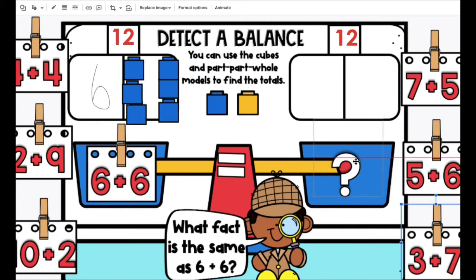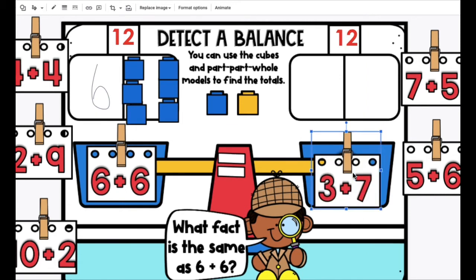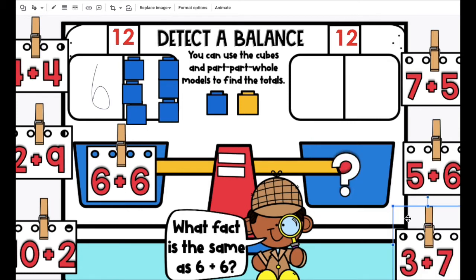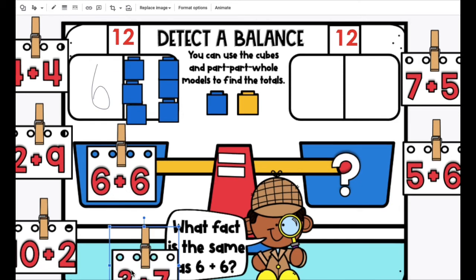We're going to find the fact that equals 12. 3 and 7. Who remembers that 3 and 7 are friends of 10? 3 and 7 equals 10, so I know it can't be that. Let's put it somewhere where we won't use it.